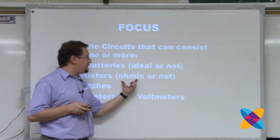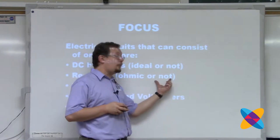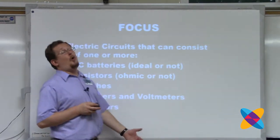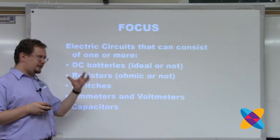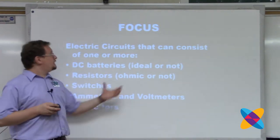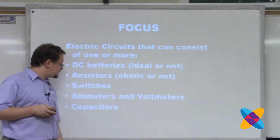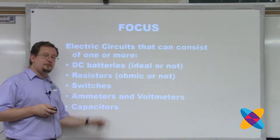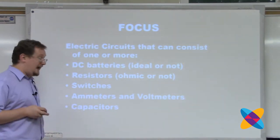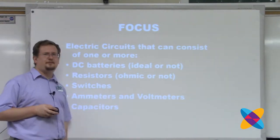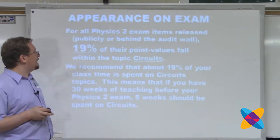Resistors are assumed to be ohmic unless otherwise stated. Sometimes students will be asked how to design an experiment to figure out whether a resistor is ohmic. The circuit elements covered include switches, ammeters and voltmeters — assumed to be ideal unless stated otherwise — and capacitors. No other types of circuit elements like transistors or inductors.